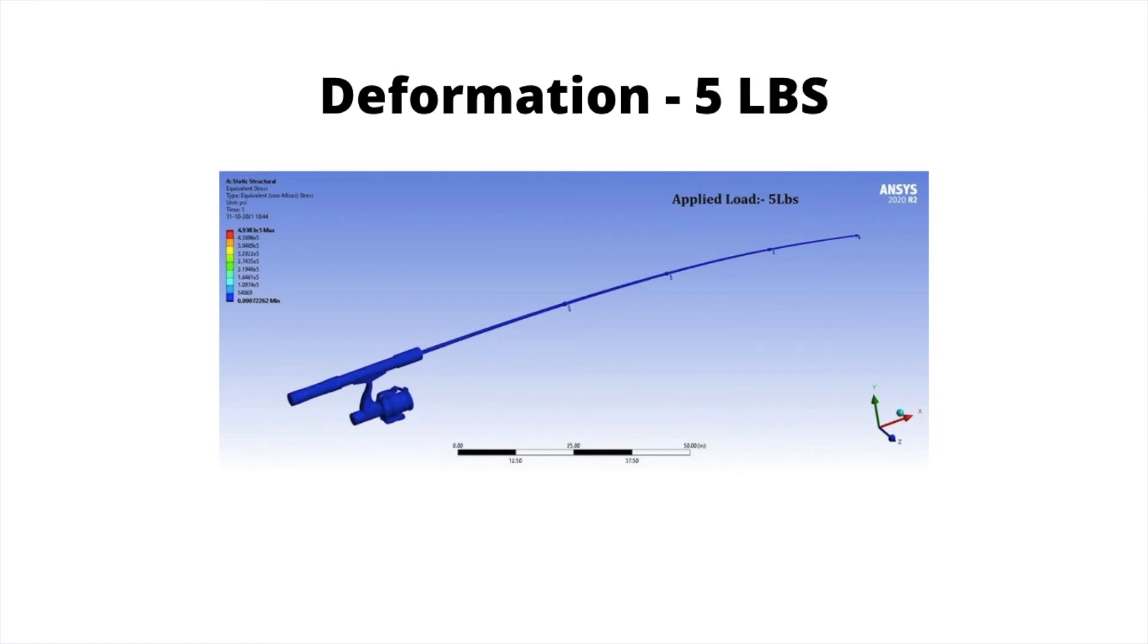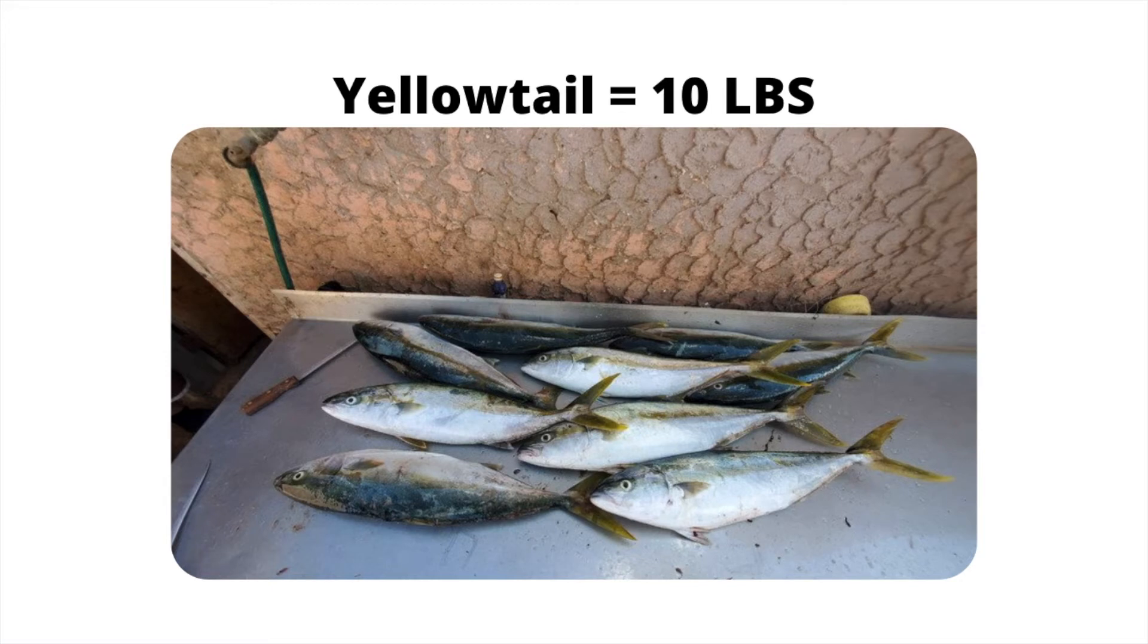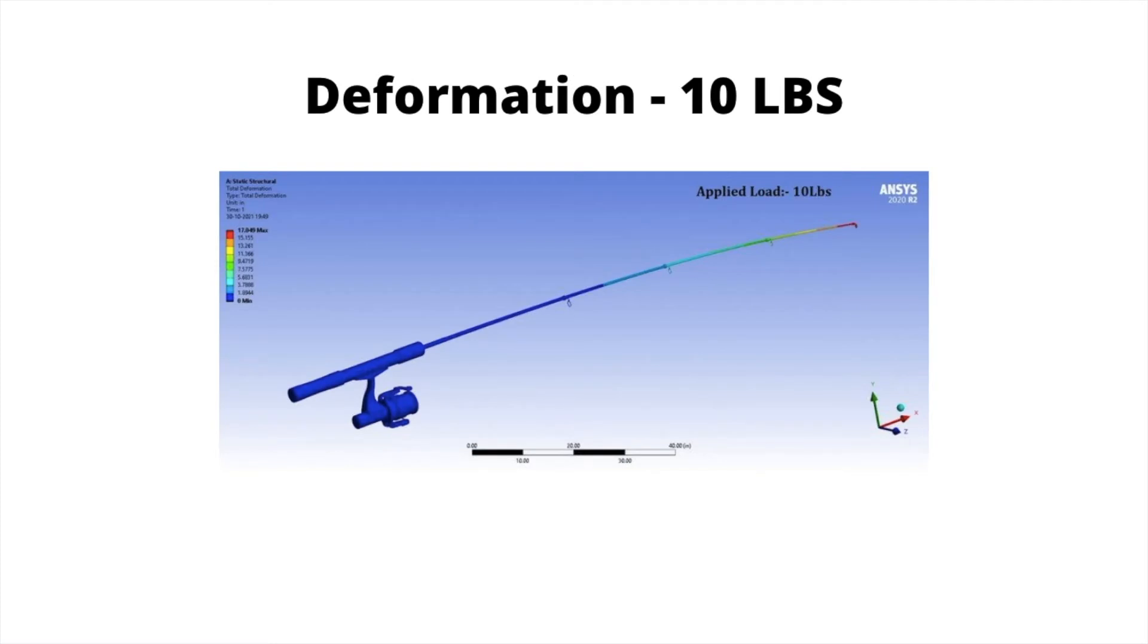Next, what if we catch a ten-pound yellowtail? So, a ten-pound yellowtail, what does it do to the deformation? As you can see, the red is a little bit bigger, and the deformation is a little bit more as a result of putting ten pounds of force on the tip.